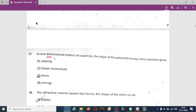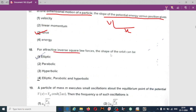For one dimensional motion of a particle, the slope of the potential energy versus position gives force. Option 3 is correct. For attractive inverse square law, the shape of the orbit can be elliptic, parabolic, or hyperbolic - all of the above.